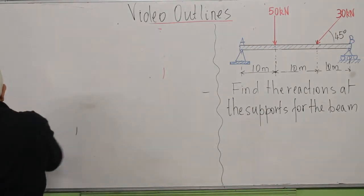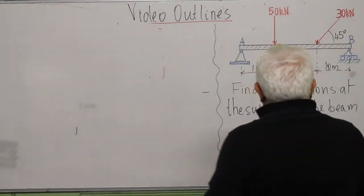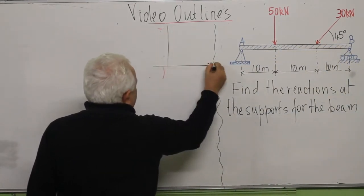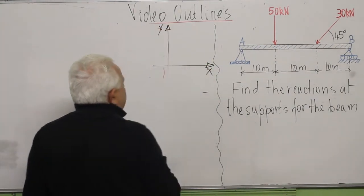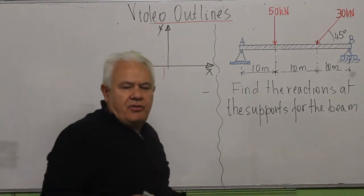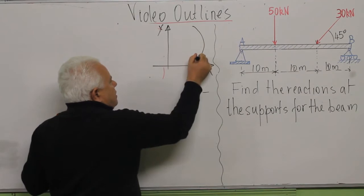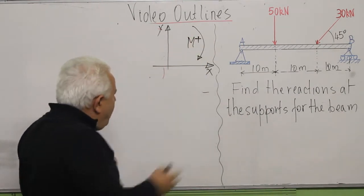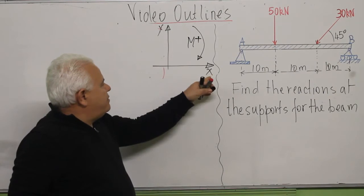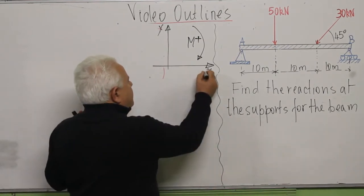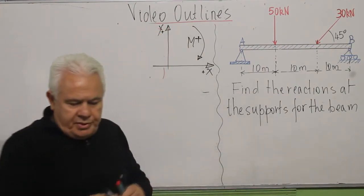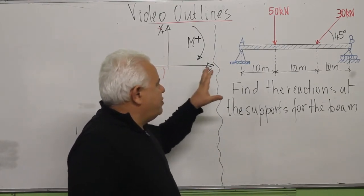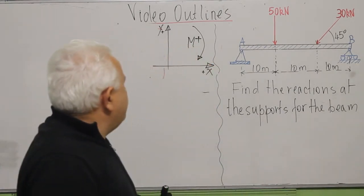Before starting the problem, we have to set up a system of axes — X and Y — and choose an orientation for the moment. I will consider that a clockwise moment is positive. So: clockwise is positive, to the right is positive along X, and up is positive along Y. I will start by calculating the moment about A, but first I have to draw the forces.